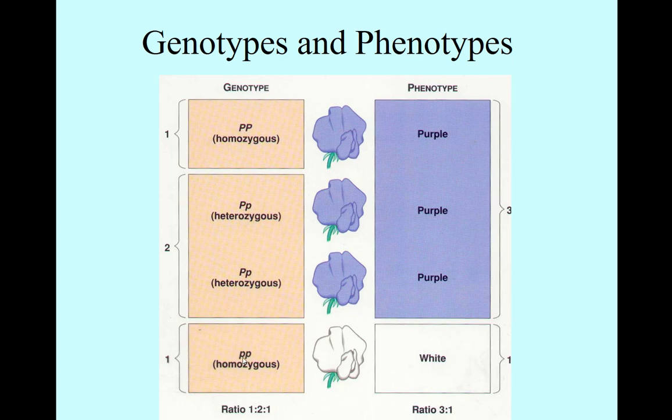If the trait represented is the color of a flower, and this color is purple, the dominant allele will generate that trait. In the homozygous dominant condition, purple will be the phenotype. Phenotype is the trait expressed.